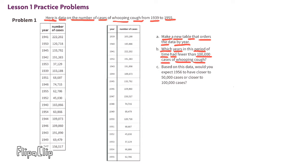Part b: Which years in this period of time had fewer than 100,000 cases of whooping cough? Here you can see that the years 1948, 49, 51, 52, 53, 54, and 55 had fewer than 100,000 cases of whooping cough.